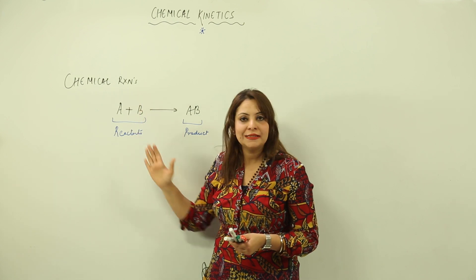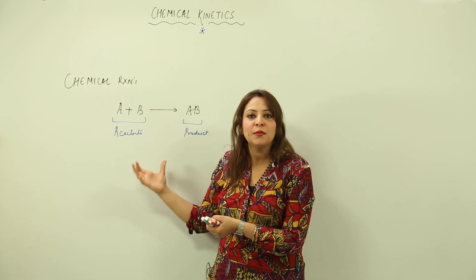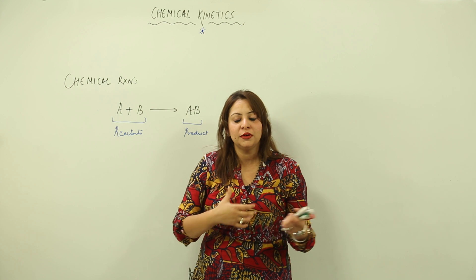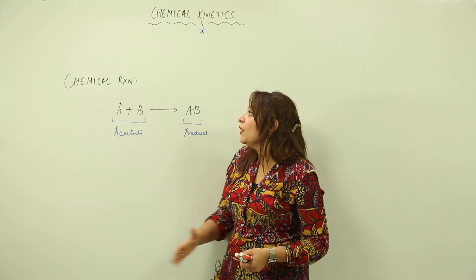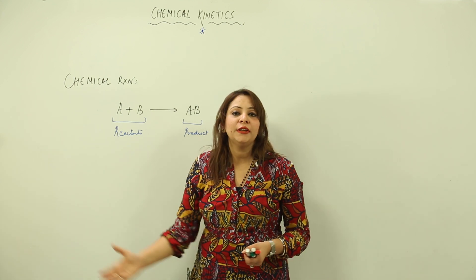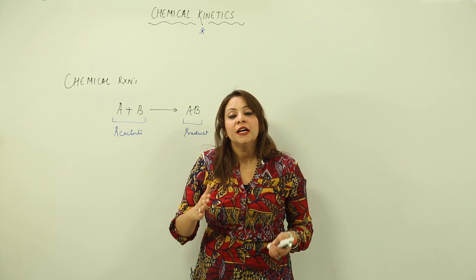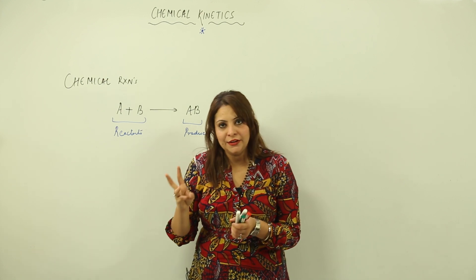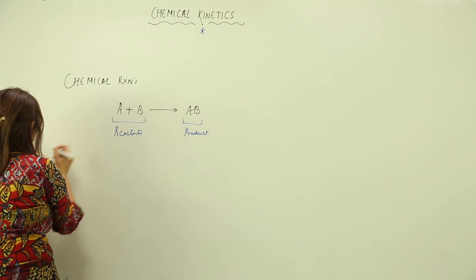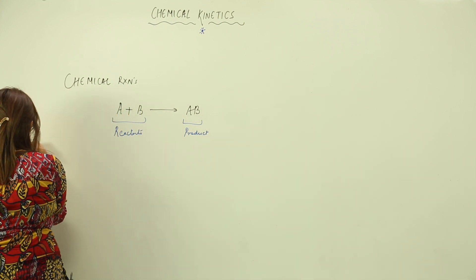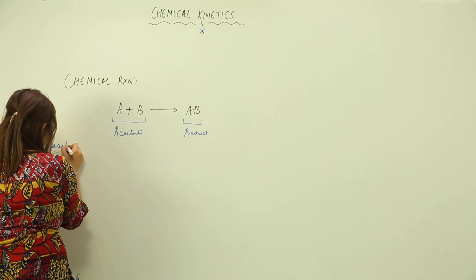This is the chemical reaction, which you have been studying from previous classes as well. Now, when we talk about chemical reaction, our major areas of concern are three areas. The first area is that when we talk of a chemical reaction, we consider about its feasibility.